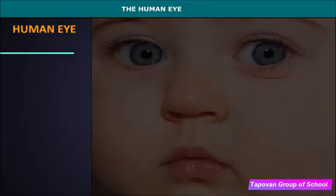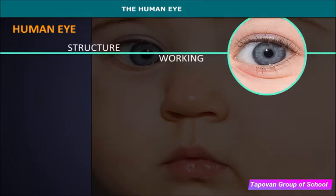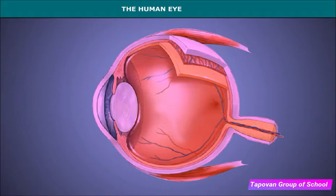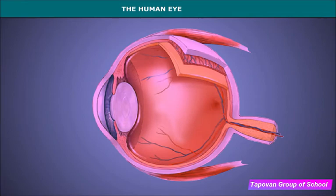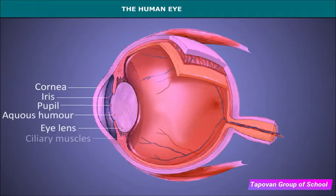The human eye is the most valuable and sensitive sense organ and a natural optical instrument. The eyes contain photoreceptors which perceive visible light. The eye is nearly spherical in shape with a slight bulge in the front. Important parts of the eye include the cornea, iris, pupil, lens, ciliary muscles, retina, and optic nerve.